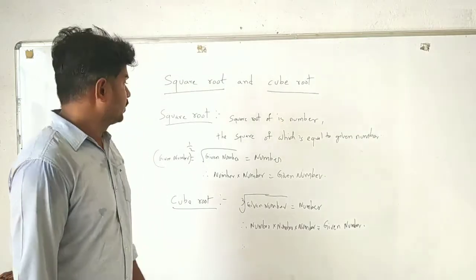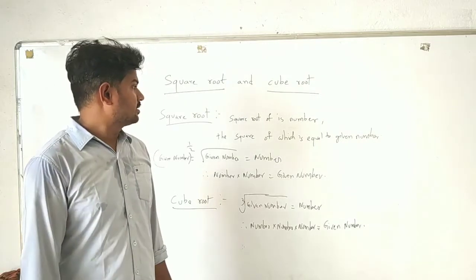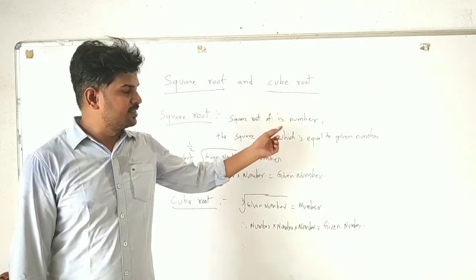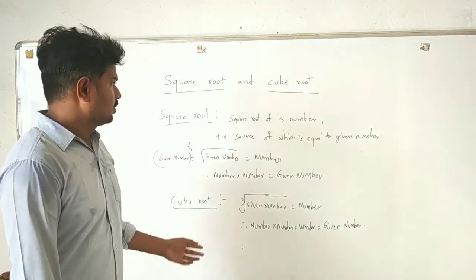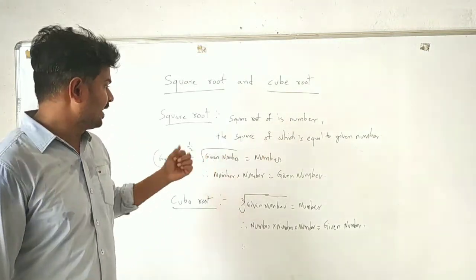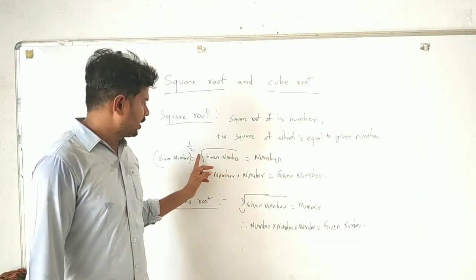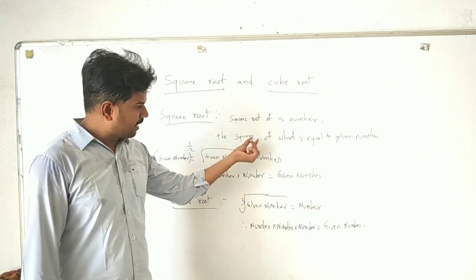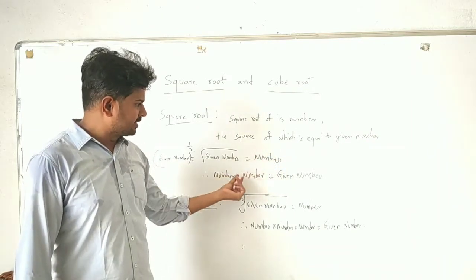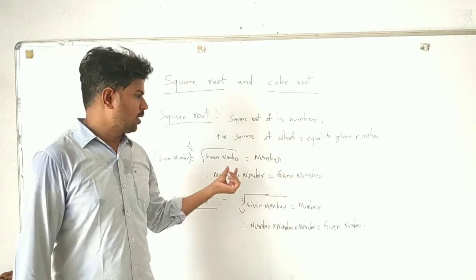What is a square root? A square root of a number is a number such that the square of that number is equal to the given number. So if you find the square root of a given number, you will get an answer, and this answer when multiplied with itself gives you that given number. That is the concept of square root.